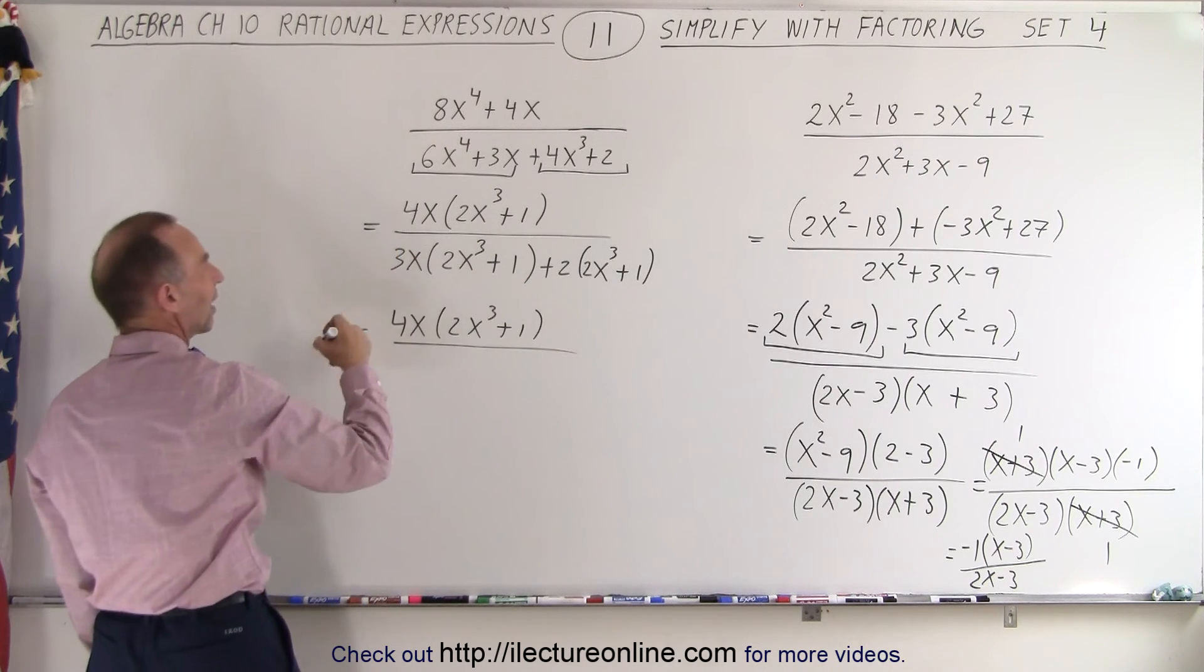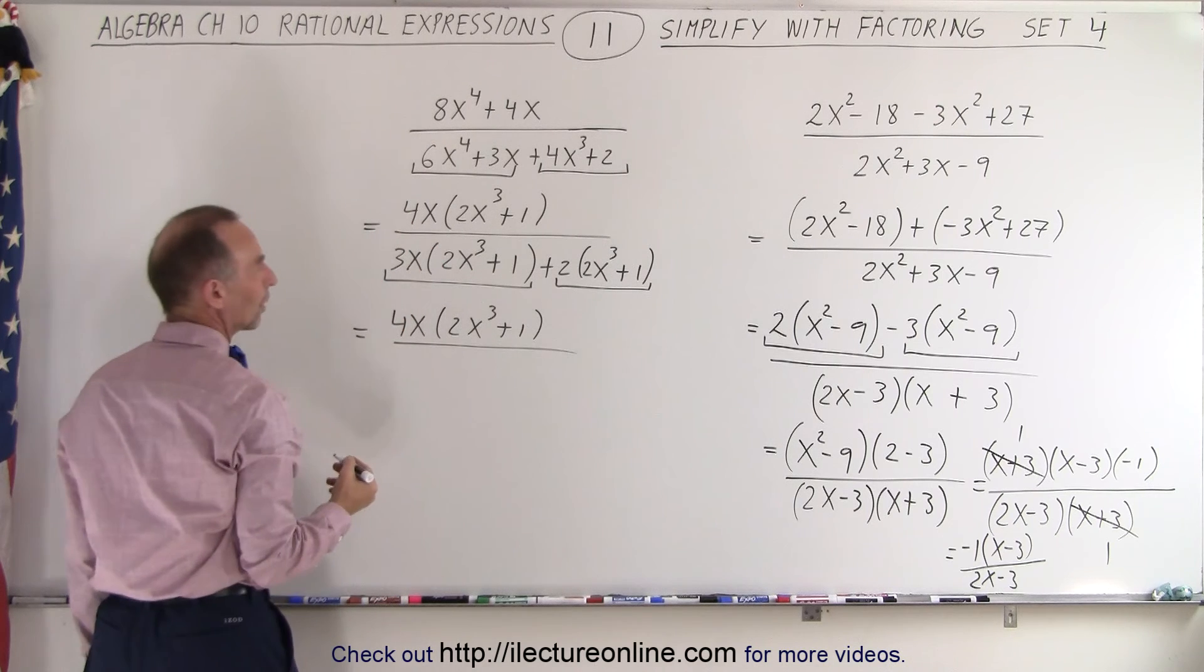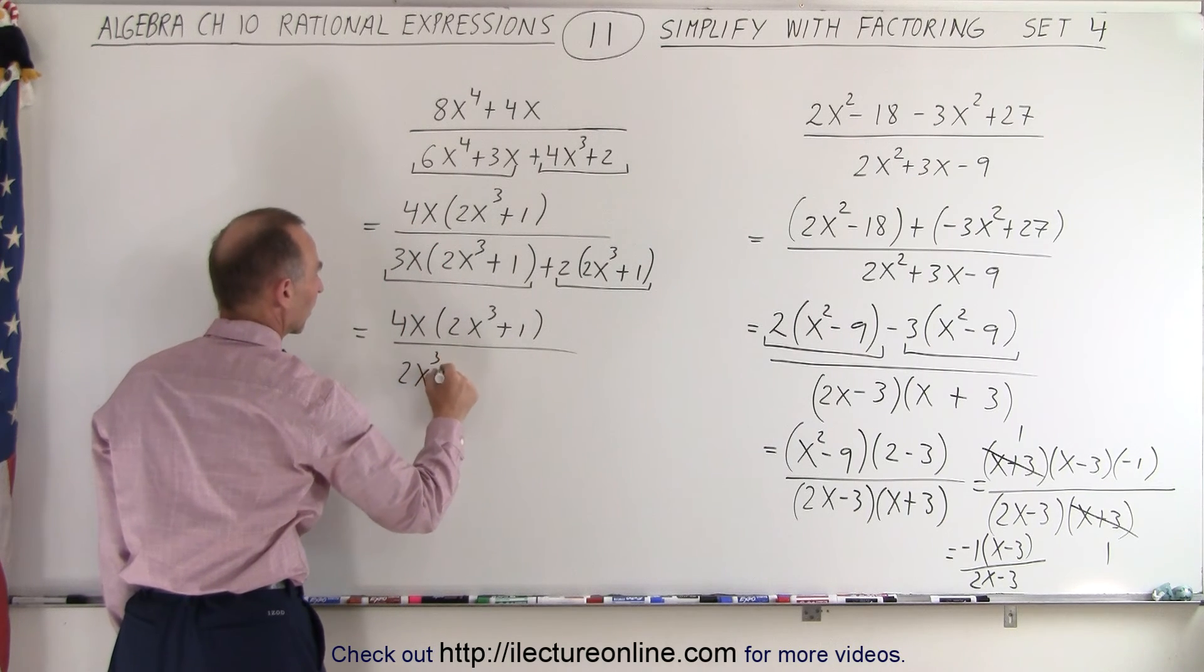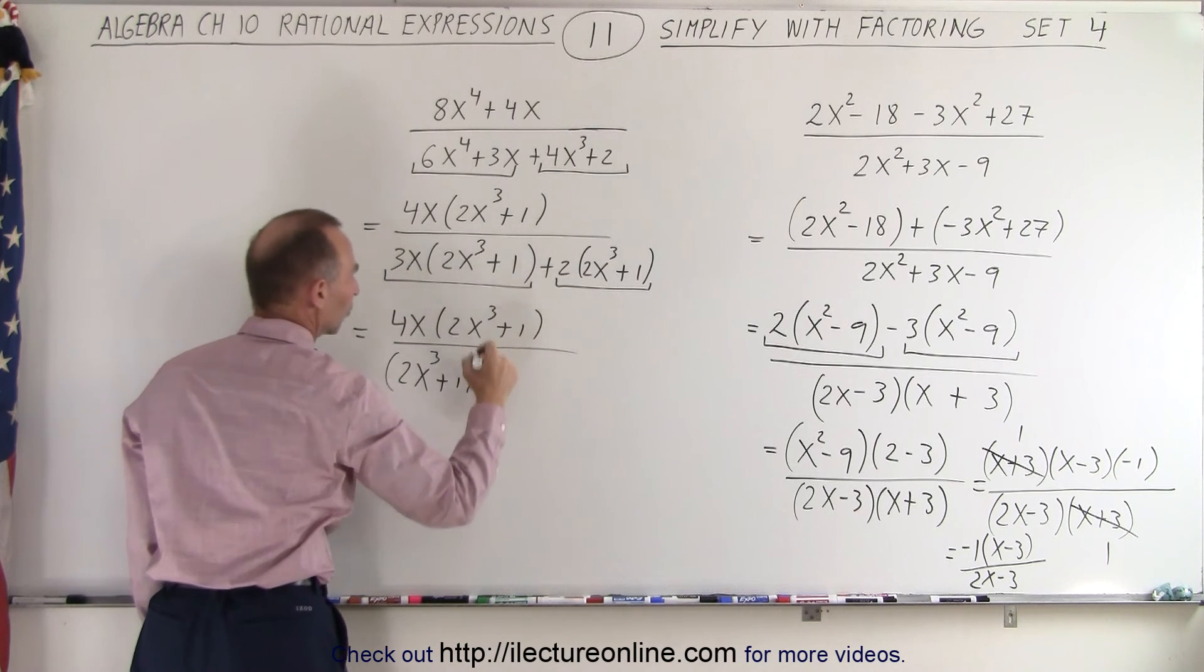In the denominator, we can factor out a 2x cubed plus 1. And then we have left with 3x plus 2.